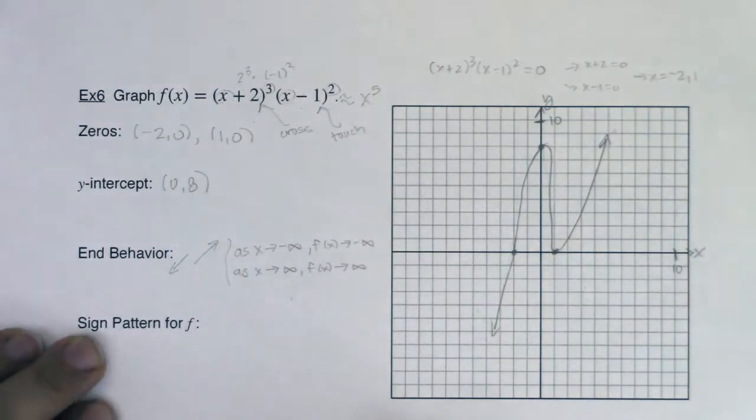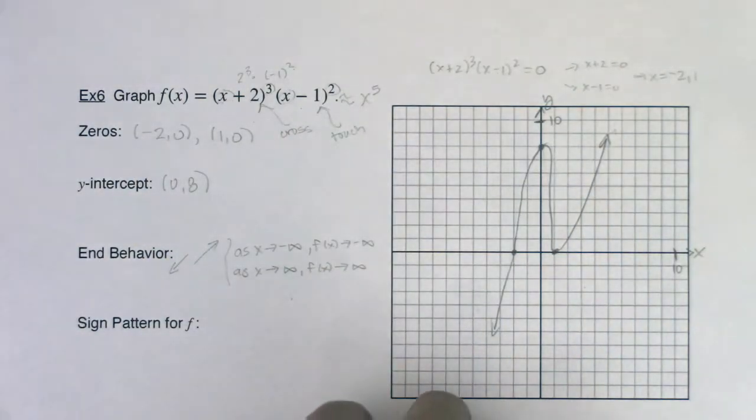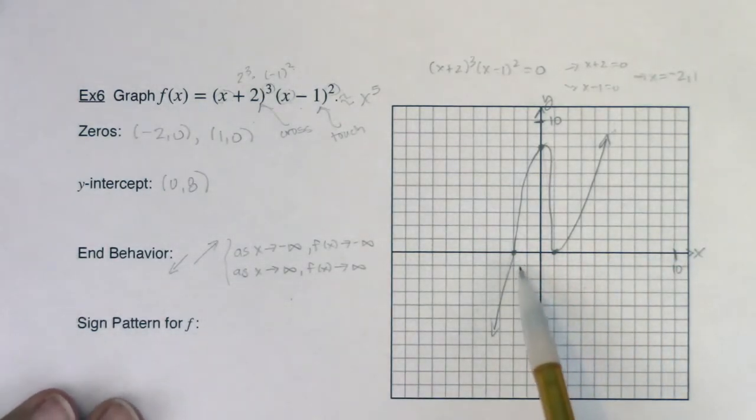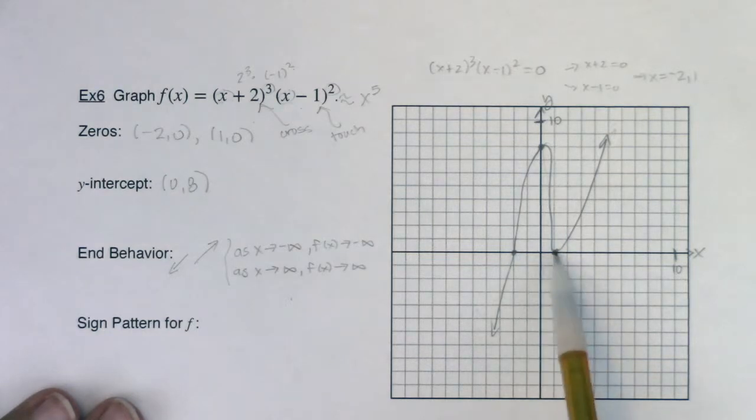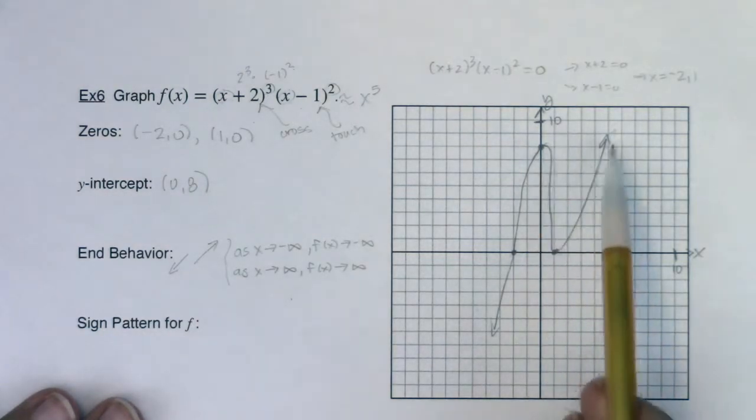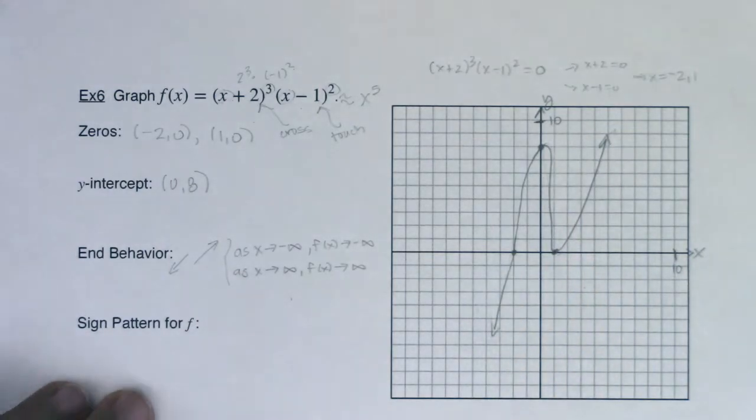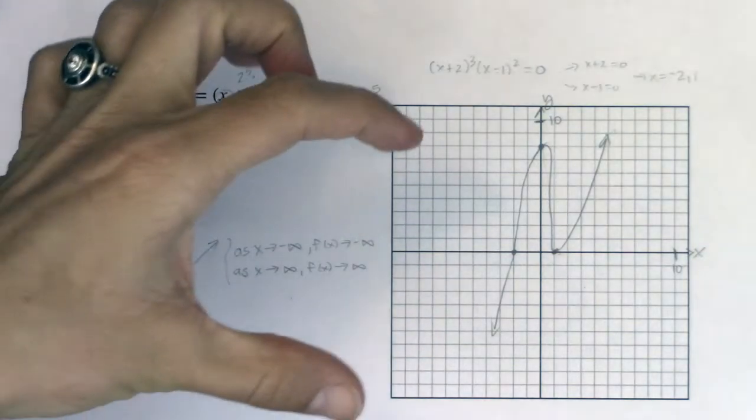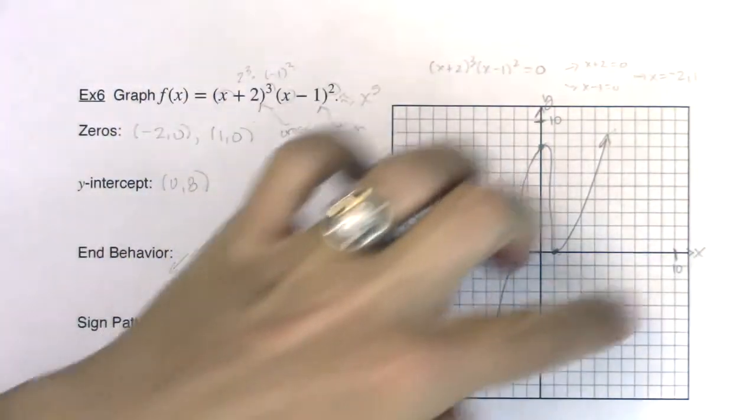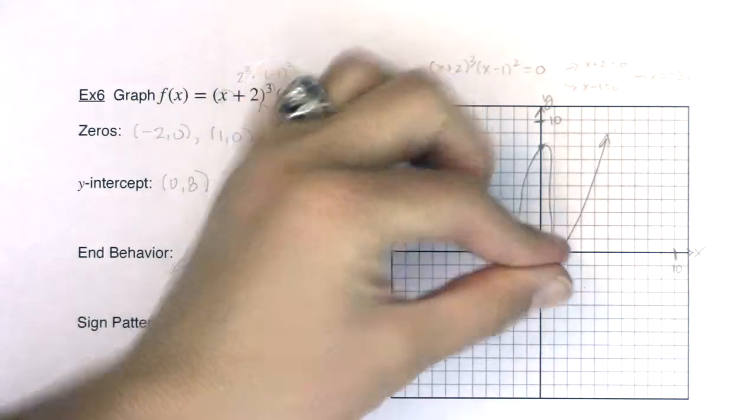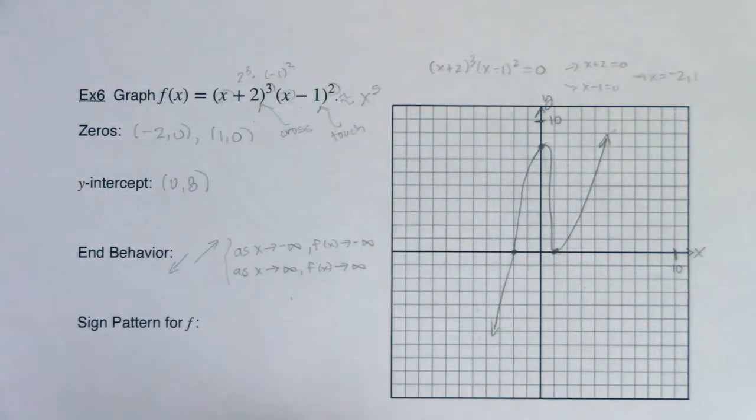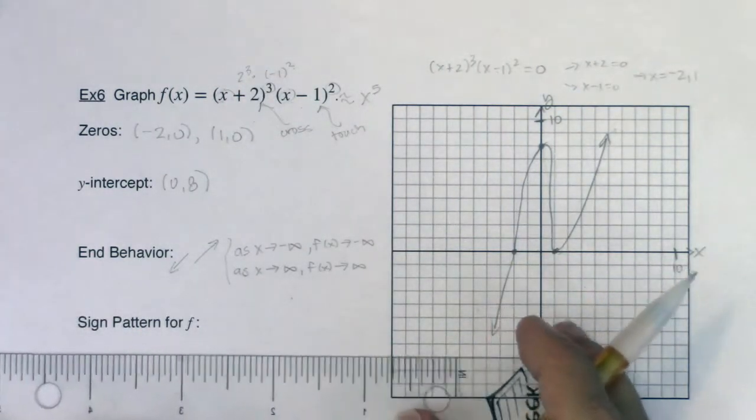So let's talk about what a sign pattern is. Because that's the graph of my function, and I'll check it on my calculator in just a moment. But that's a decent sketch. Again, cross the x-axis, touch the x-axis. I've got my two x-intercepts, my one y-intercept, I see my end behavior. That's great. Now a sign pattern. Imagine you wanted to take this set of two axes and just kind of condense it into one number line.